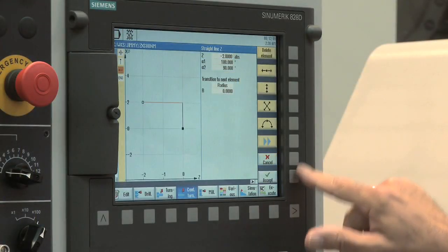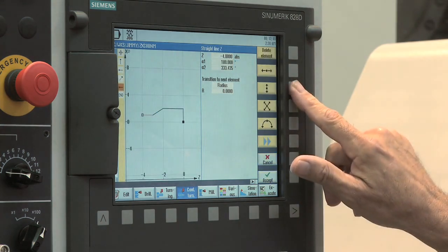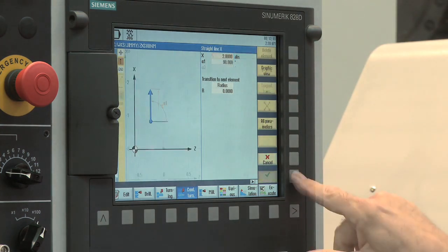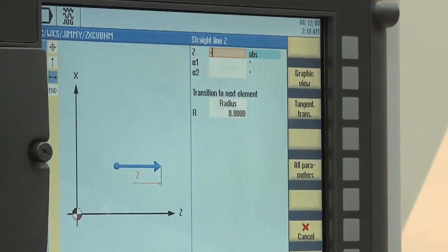Using contour calculator, you can quickly define both complex and simple shapes from a part drawing, directly on the CNC. The calculator can do this even when the geometry elements are only partially defined.